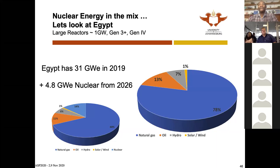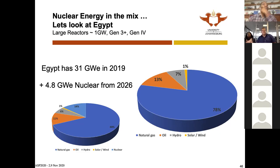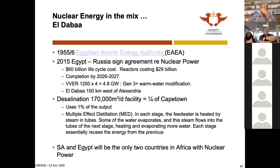Egypt is currently using 31 gigawatts — very similar to South Africa. Egypt could be completely satisfied by the Grand Inga hydropower project, but its energy mix is mostly fossil fuels — gas and oil — with only 8% environmentally friendly. Egypt is going nuclear: they start construction next year on 4.8 gigawatts, to be finished in 2026.